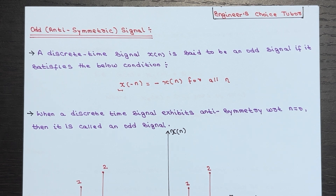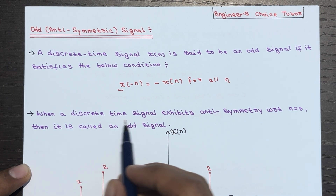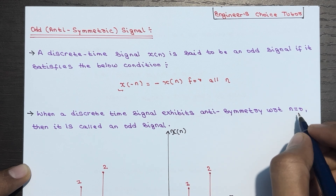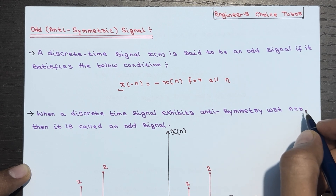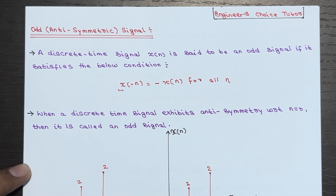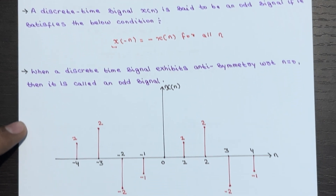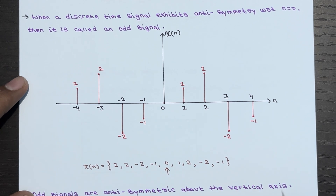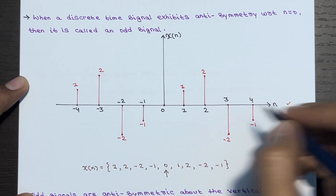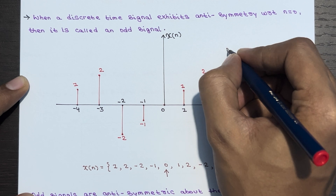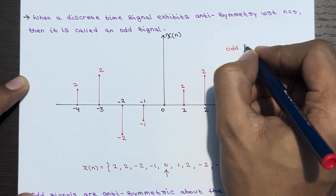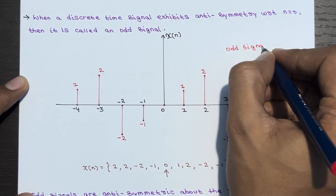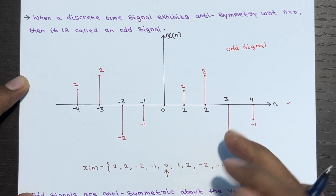This signal exhibits anti-symmetry with respect to n = 0. When a discrete time signal exhibits anti-symmetry with respect to n = 0, it is called an odd signal. Let's understand this with an example.